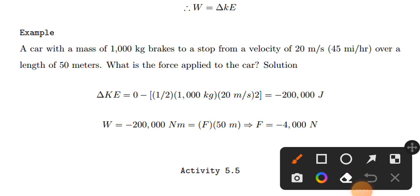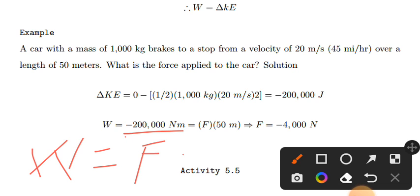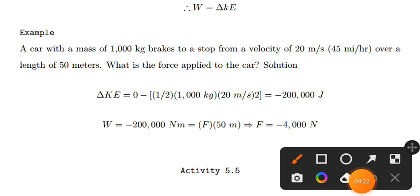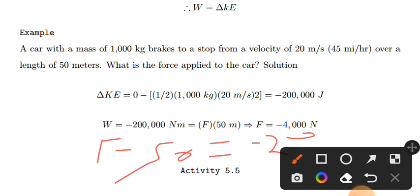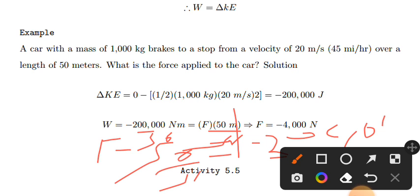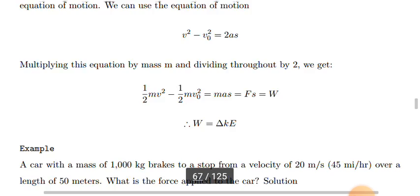Work is equal to the change in kinetic energy. Work is also equal to F times s. So F times 50 meters equals the change in kinetic energy. F times 50 meters equals the work value. Solving for F gives us the force, which is the answer in Newtons.